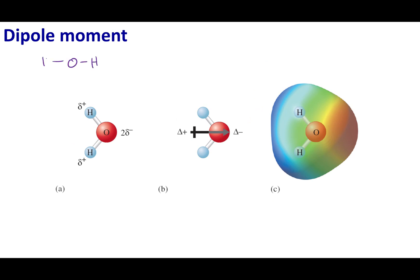I can draw my Lewis dot structure of water and get my steric number — steric number four, with two lone pairs. This gives the bent structure. While a flat Lewis dot structure is drawn, it is not telling me the molecular geometry. If I draw the molecular geometry, I have a bend where hydrogen, oxygen, and hydrogen are not all in a line. Now I can draw dipole arrows — oxygen is more electronegative than hydrogen, so I evaluate each bond.